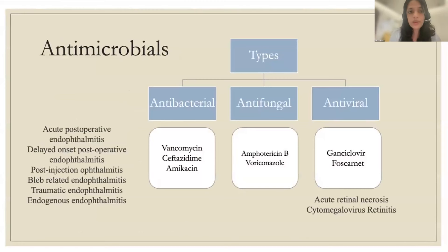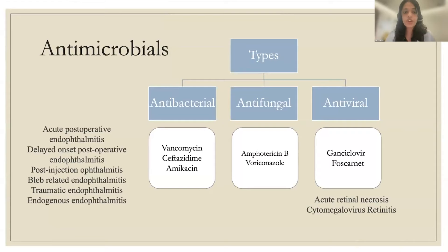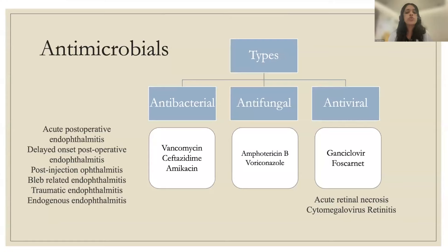Antimicrobials are given in acute post-operative endophthalmitis, delayed-onset post-operative endophthalmitis, post-injection endophthalmitis, bleb-related endophthalmitis, traumatic, and endogenous cases. They can be antibacterial, antifungal, or antiviral. Most commonly used antibacterials are vancomycin, ceftazidime, and amikacin. Antifungals are amphotericin B and voriconazole. Antivirals — ganciclovir and foscarnet — are used for acute retinal necrosis and CMV retinitis.